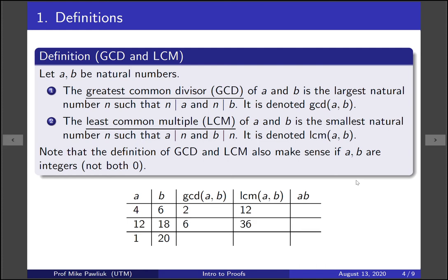For twelve and eighteen, their greatest common divisor is six. The only other divisor possible would be twelve, but twelve doesn't divide eighteen. And their least common multiple is thirty-six.